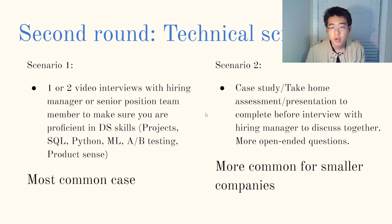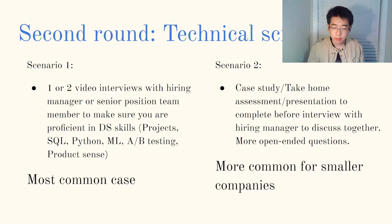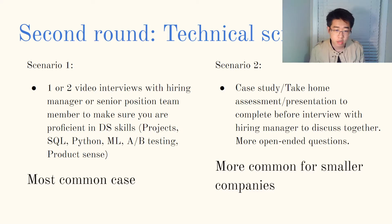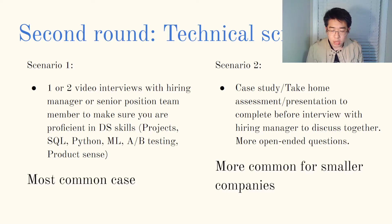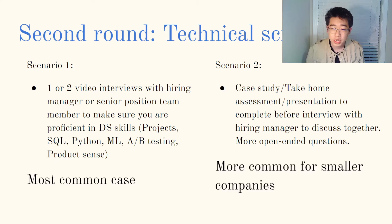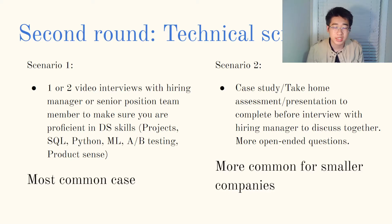If you pass the HR round, you'll get to the second round: the technical screen. There are usually two different scenarios. The most common is scenario one, which includes one or two video interviews with the hiring manager or a more senior data scientist team member. They'll ask about your background, the projects on your resume, and test you on SQL or Python skills. They might ask questions on machine learning, A/B testing, or product sense in general.